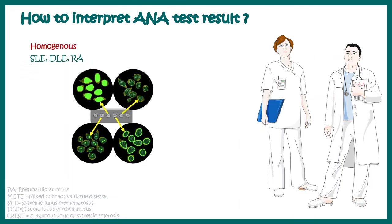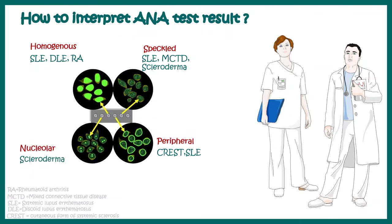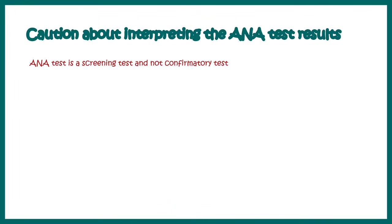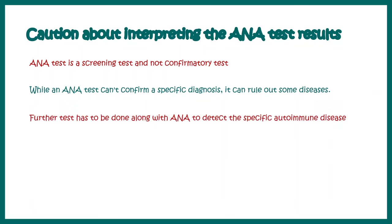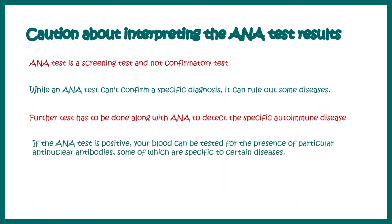If the pattern is homogeneous, the individual most likely might have systemic lupus or rheumatoid arthritis. Other patterns such as speckled, peripheral, or nuclear patterns have other interpretations. The ANA test is essentially a fundamental screening method — it is not a confirmatory test. Additional blood tests need to be done to diagnose systemic lupus. If the ANA test is positive, it means there may be some anti-nuclear antibodies present, but further tests must be performed.